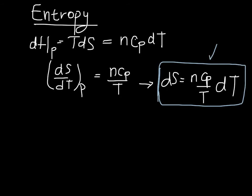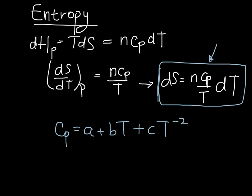This expression is what we use for calculating entropy changes. It's straightforward if Cp is a constant. If Cp is not constant, you need to integrate the function, since Cp generally varies with temperature — we'll work examples of that case in class.